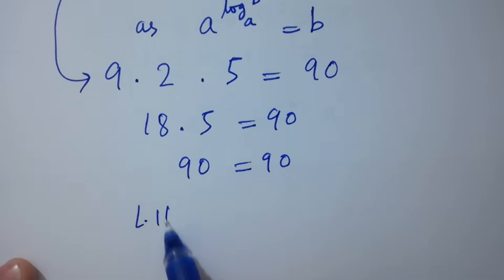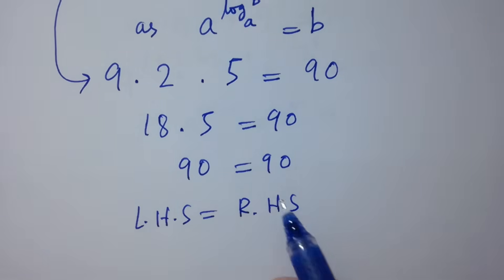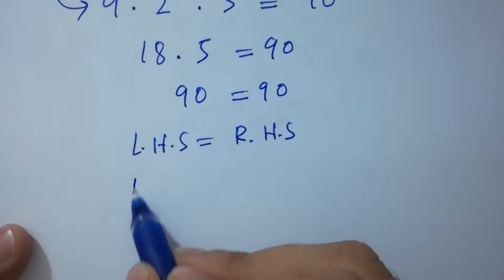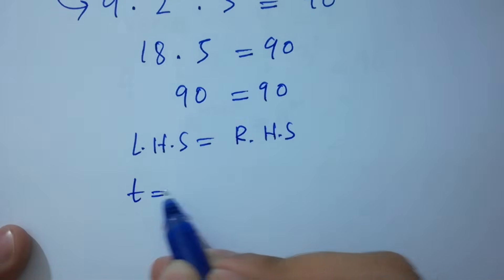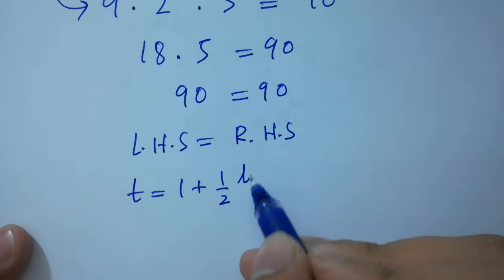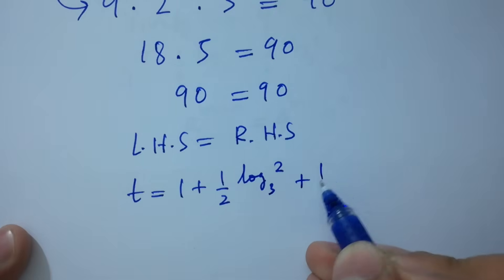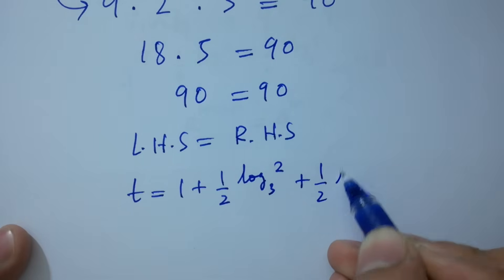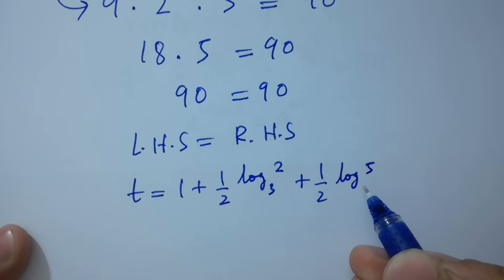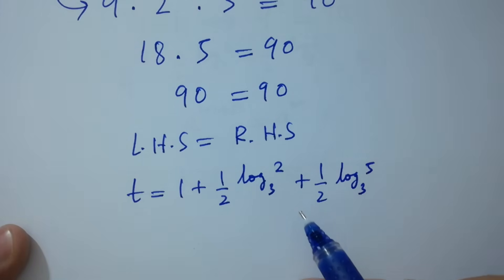Left hand side equals right hand side, which shows that the value of t equals 1 plus one-half log 2 to the base 3 plus one-half log 5 to the base 3 satisfies the equation. Thanks for watching this video.